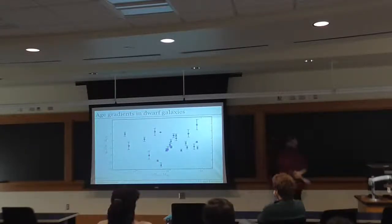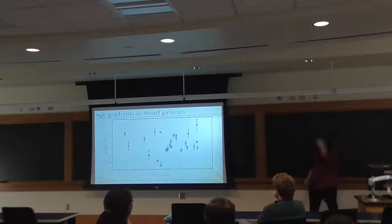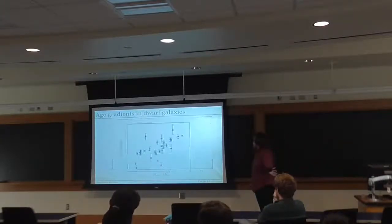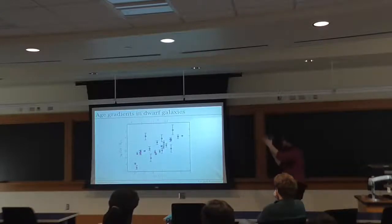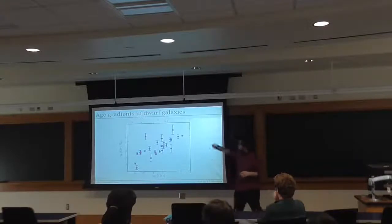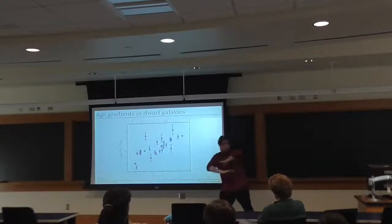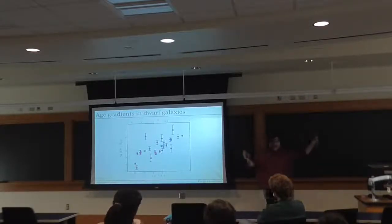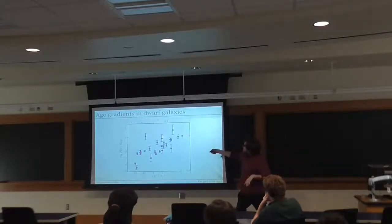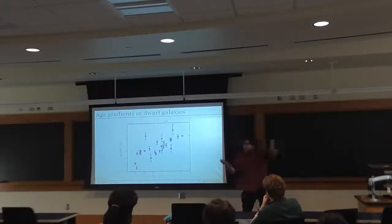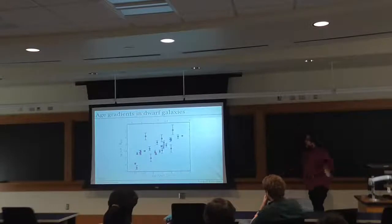We looked for anything this correlated with, and found it correlated with the overall formation time of the galaxy — the slope of the median age gradient versus the median age of the whole galaxy. Galaxies that formed later had flatter age gradients, and galaxies that formed earlier had much larger age gradients. This was interesting.